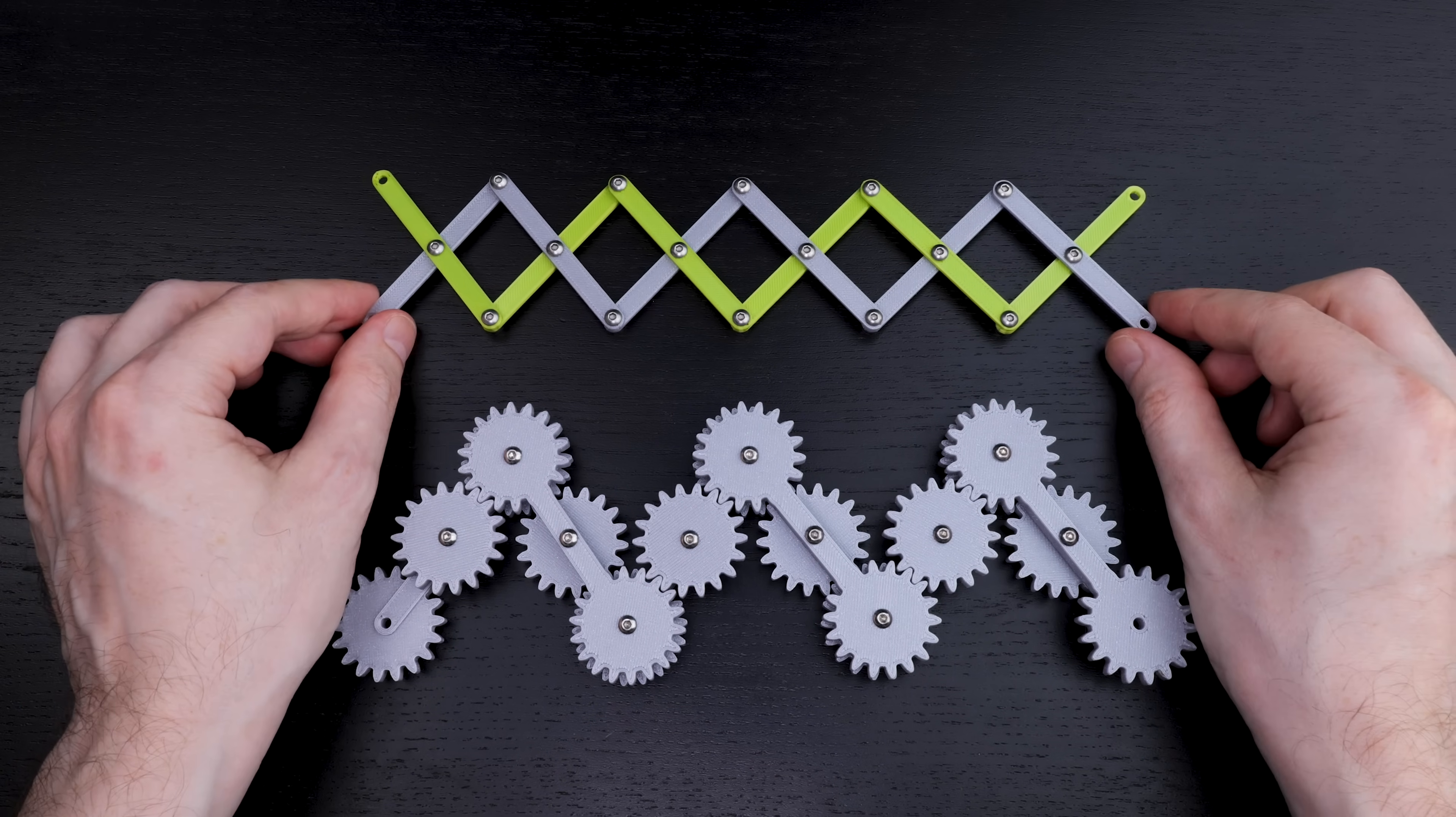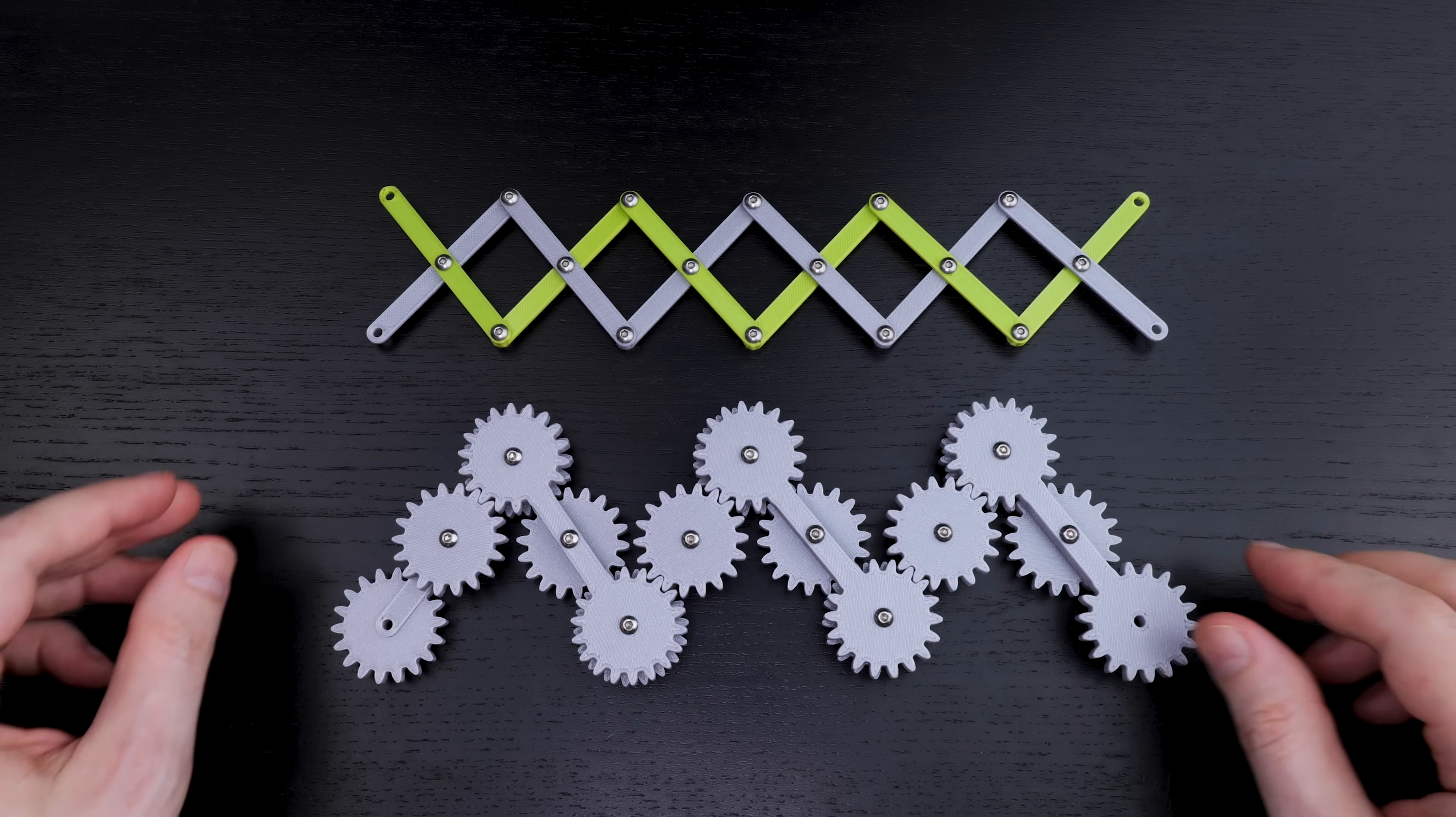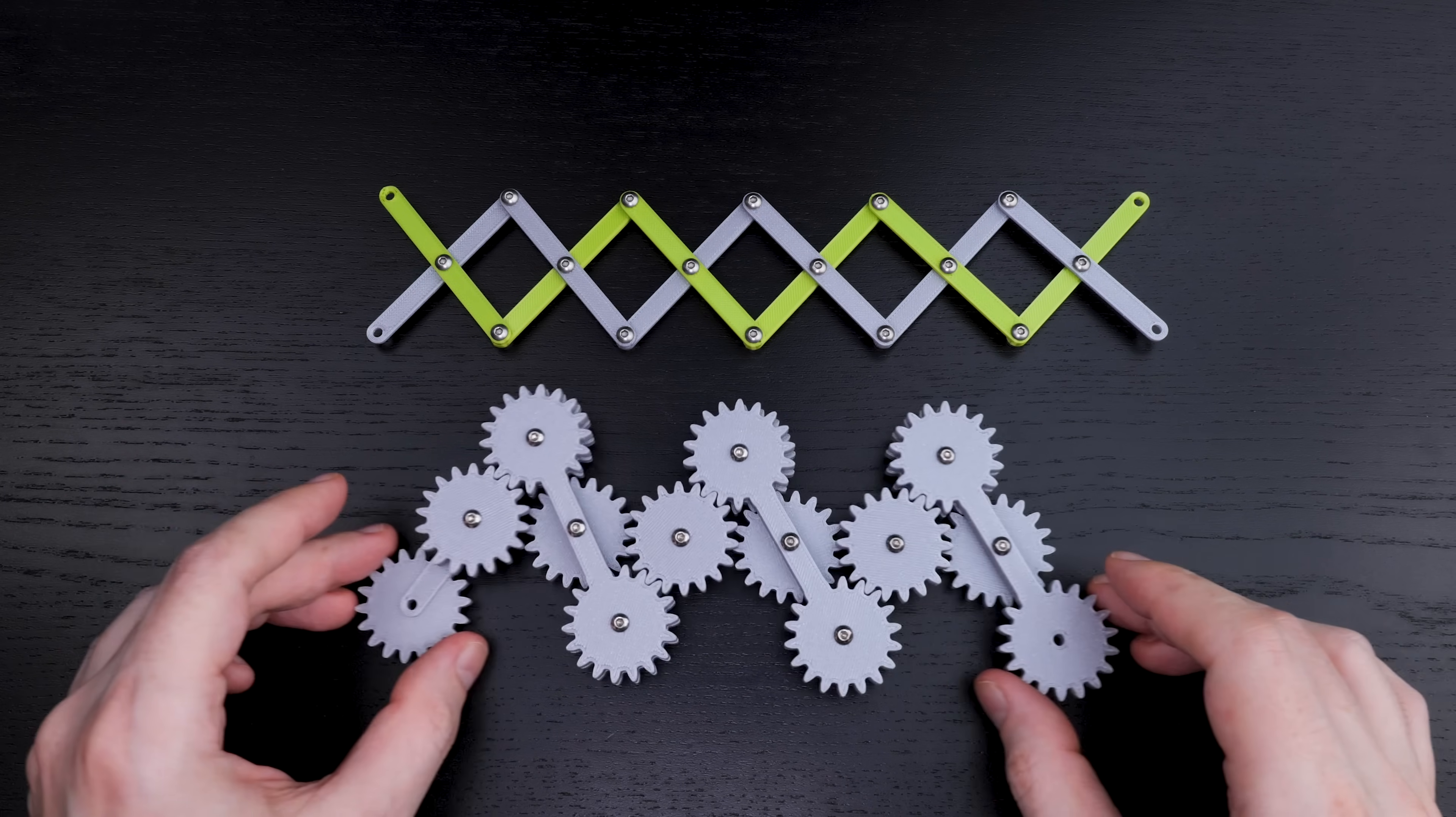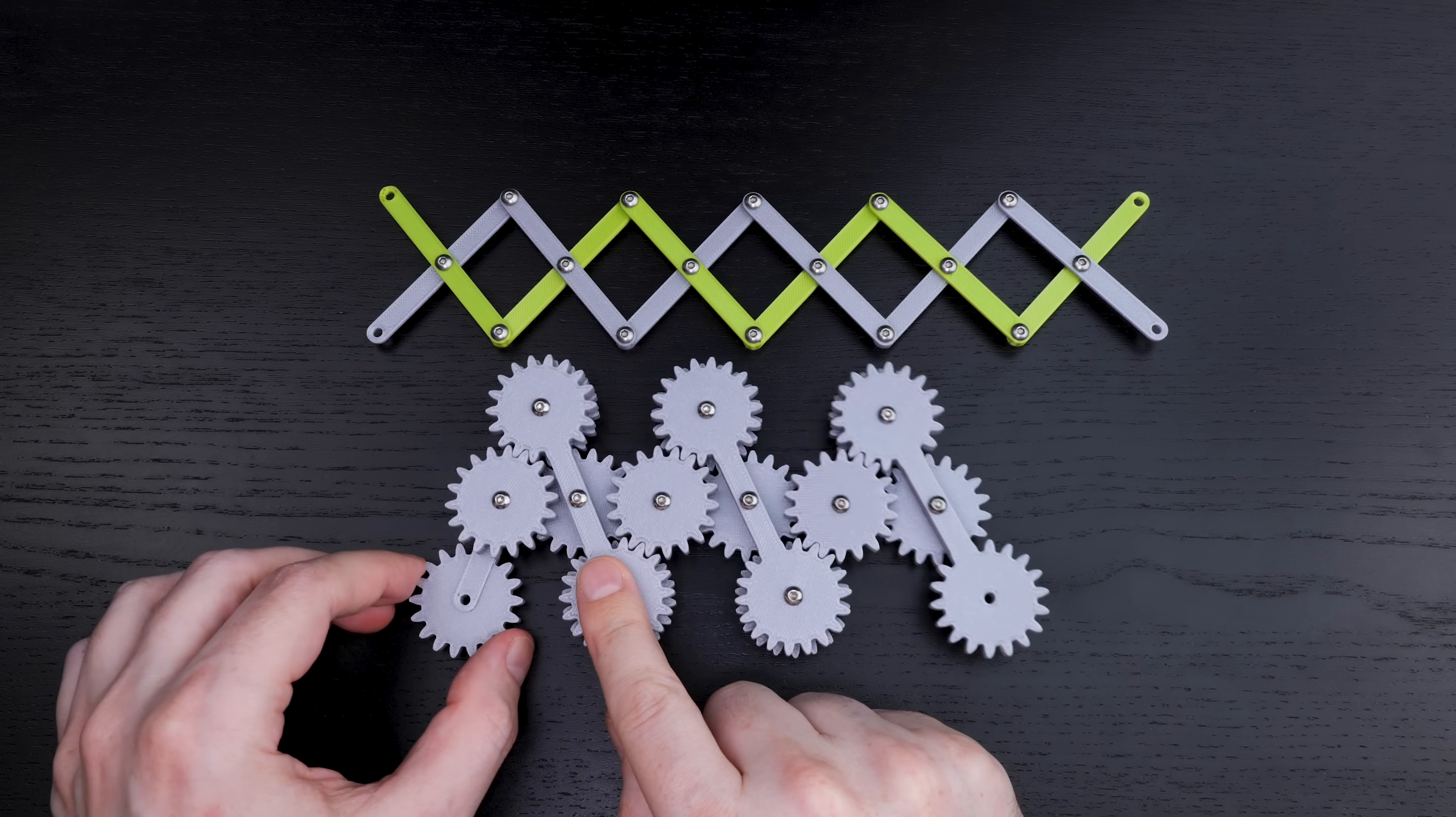Now, what if you wanted only half of the scissor linkage, say this gray half, but you still want it to act like a scissor linkage? Well, here you go. Ignore all the gears for a minute. I can extend and retract it in exactly the same way. It has one degree of freedom.